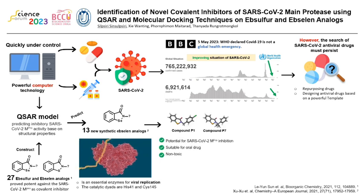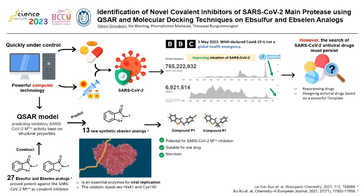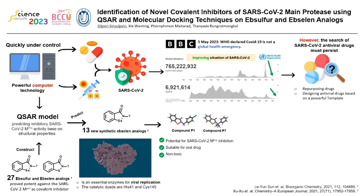The QSAR model was used to predict the inhibitory activity of 13 synthetic epsilon analogs, and found that compounds P1 and P7 are remarkable compounds. First, they have the highest inhibitory activity. Second, they tend to be oral drugs. And last, they don't have toxicity.